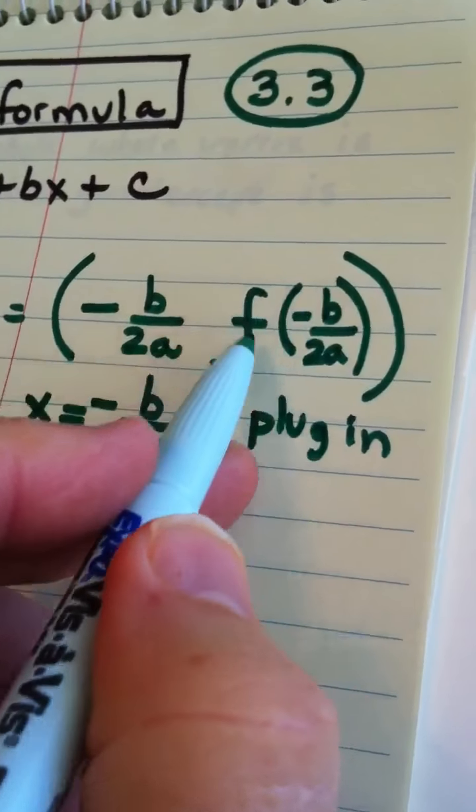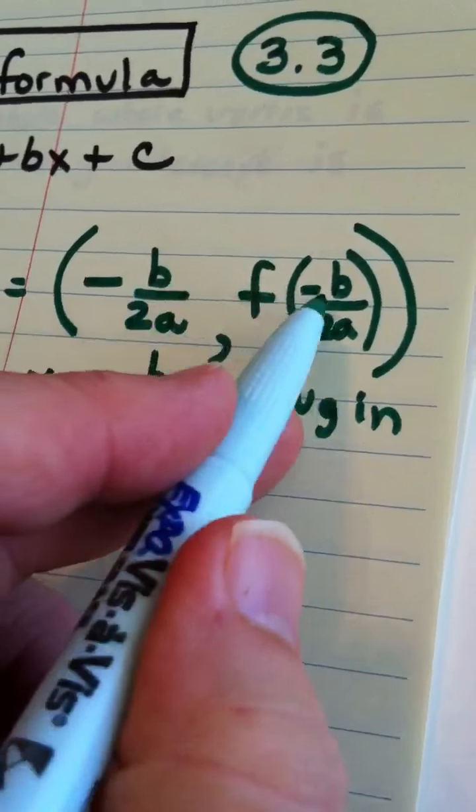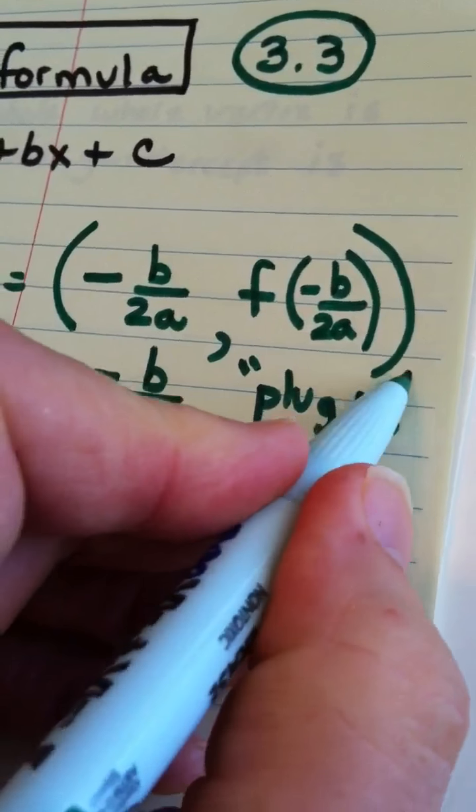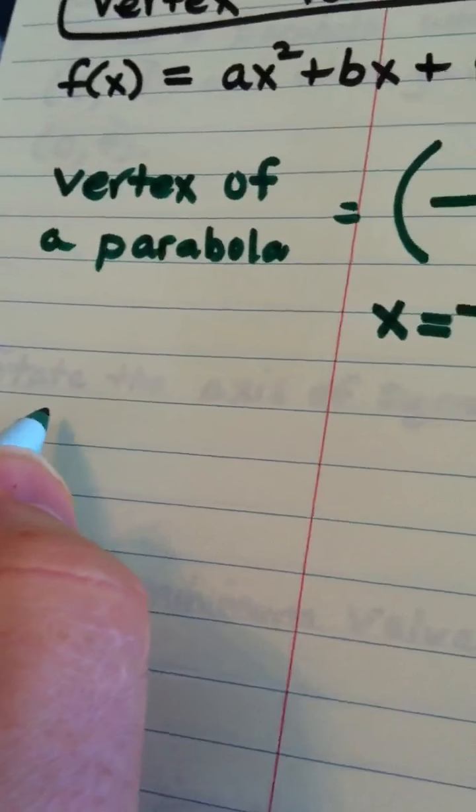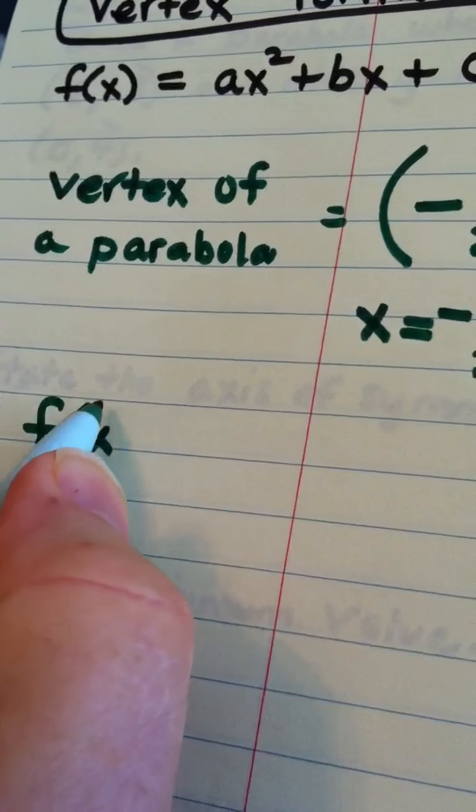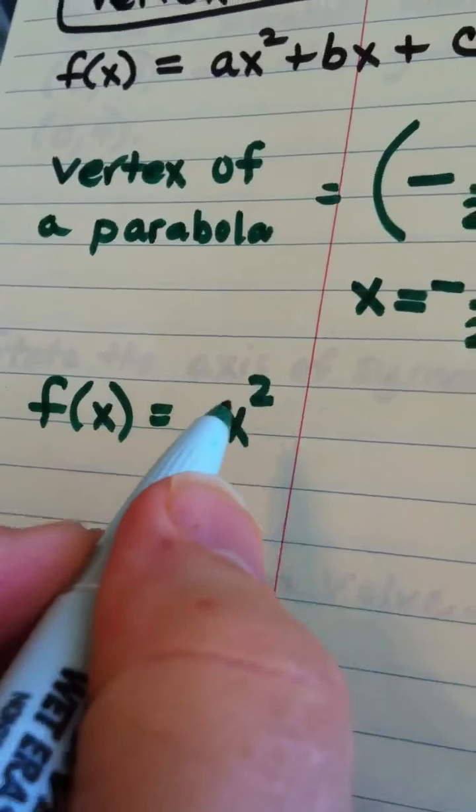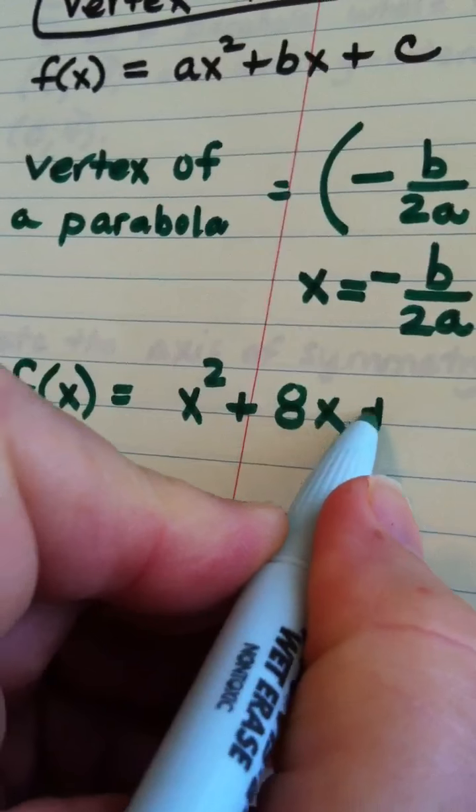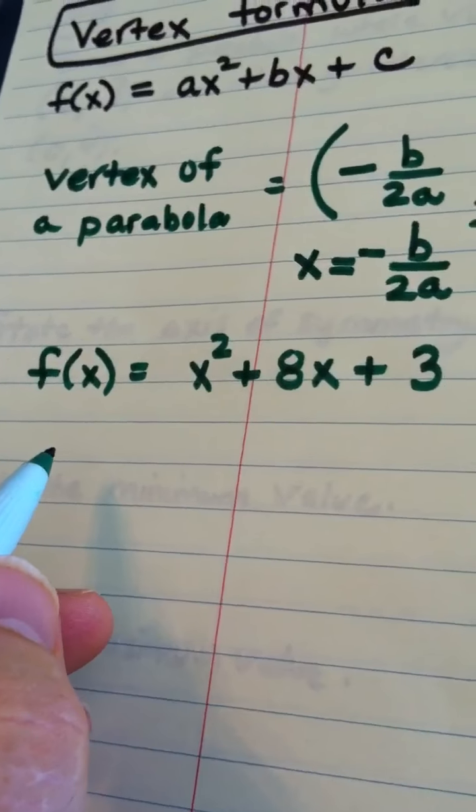I know this looks weird, but all this is really telling you to do is take the x value you got from here, and plug it into the function, and that will give you the y value. So, for example, if I had the function x squared plus 8x plus 3, and I wanted to find the vertex.